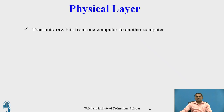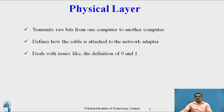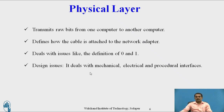The first layer is the physical layer. In the physical layer, the user can transmit raw bits from one computer to another in the form of bitstreams — 0s and 1s. While transmitting data in the form of 1s, the sender gets an acknowledgement in the form of 0s; if sending in the form of 1s, the reply is in the form of 1s. It defines how the cable is attached to the network adapter — the connection between transmitter and receiver. This layer defines a physical path and deals with issues like definition of 0s and 1s, electrical, mechanical, and procedural interfaces.